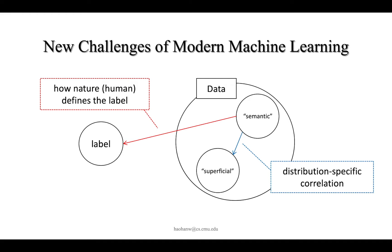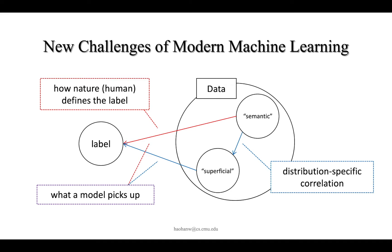These signals usually lead to spurious associations between the superficial signals and the label. When a model is asked to minimize the empirical loss, it will pick up whichever signal it can, leading to the misalignment between the models and humans.